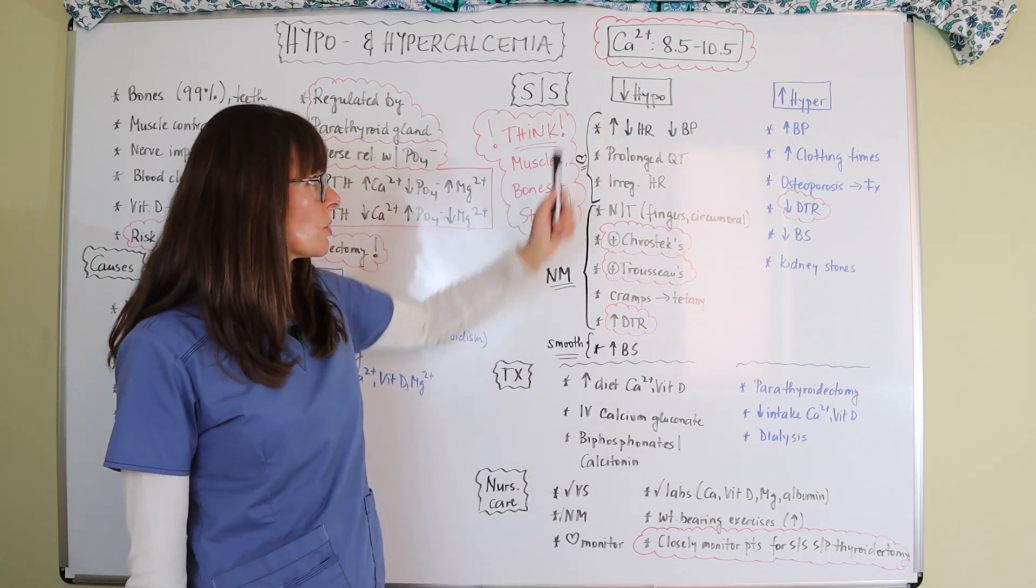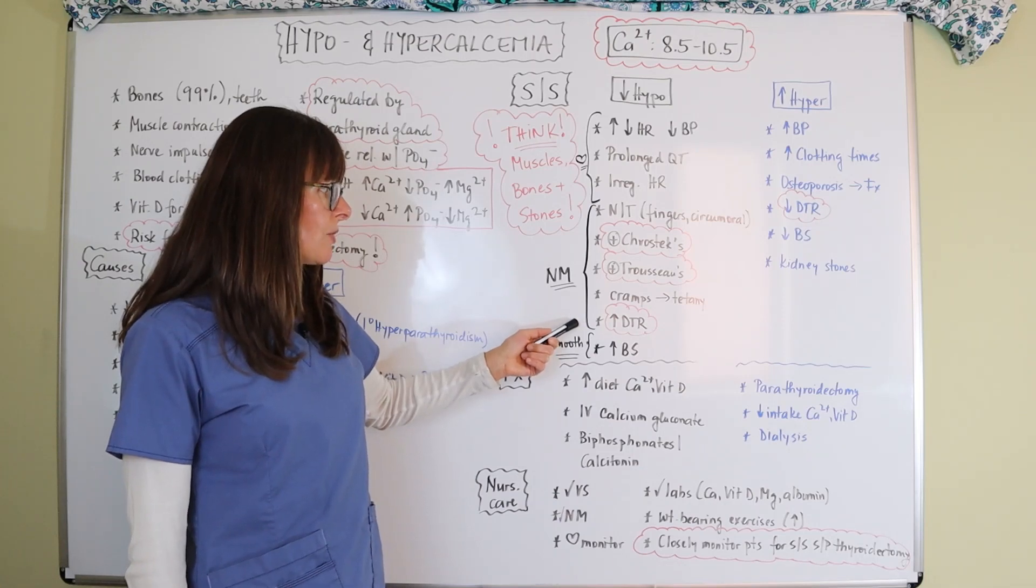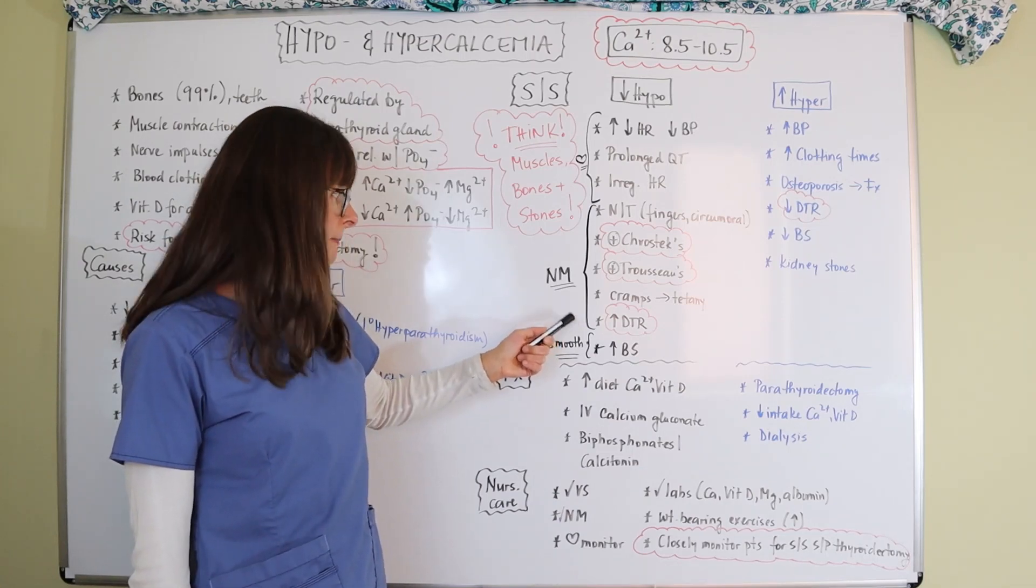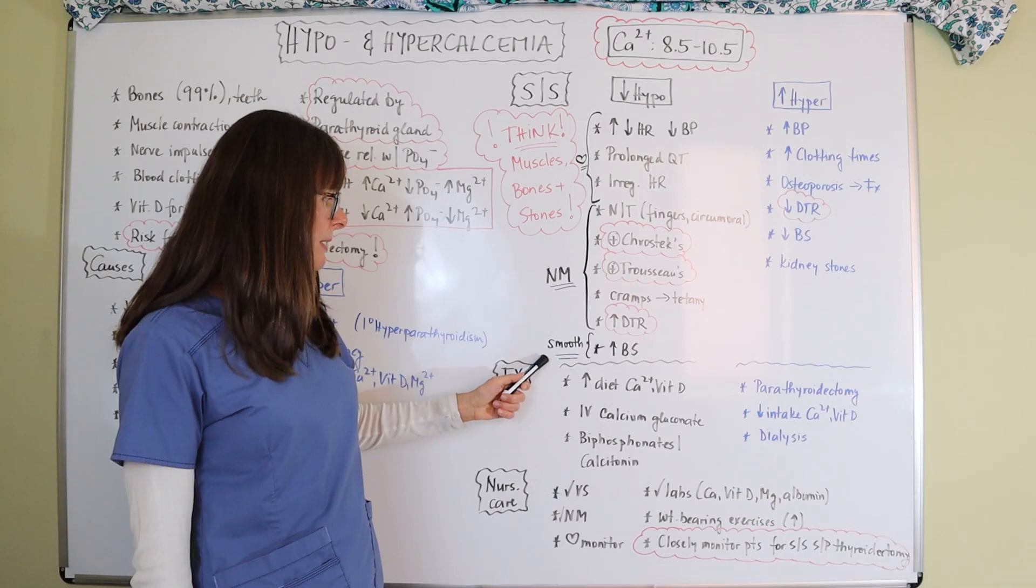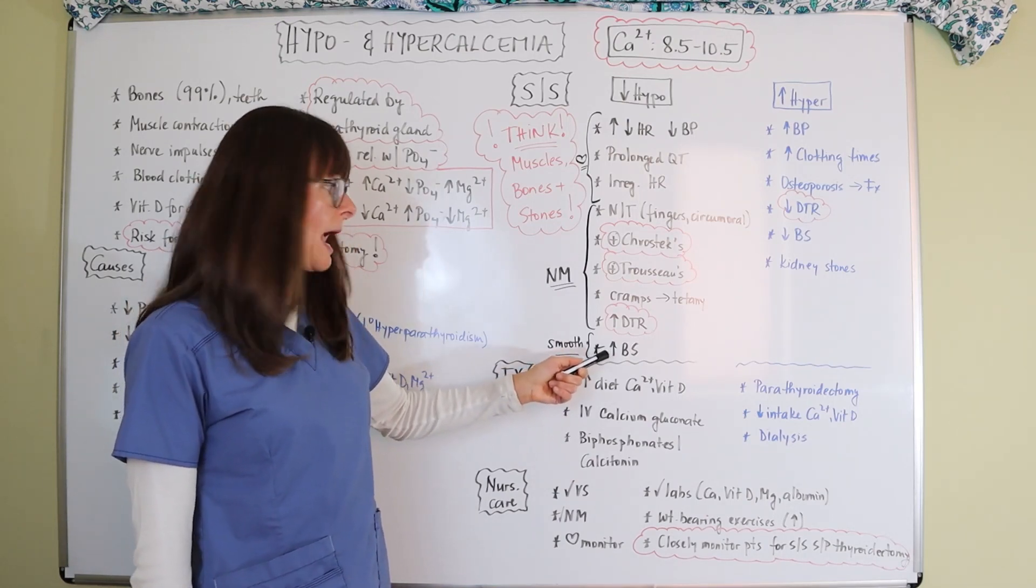And hypocalcemia, so low levels of calcium, also will make the deep tendon reflexes increased. And then in terms of smooth muscle, hypocalcemia can make the bowel sounds hyperactive.